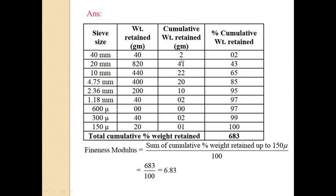So this percentage weight retained how we can calculate it. That is the weight retained on each IS sieve divided by total sample multiplied by 100. We get this value 2. So once again, this weight retained on this 40 mm IS sieve that is 40 divided by total weight of sample 2000, multiply by 100 we get the value 2. Similar way we are finding the percentage weight retained on each IS sieve. That is 820 divided by 2000 multiplied by 100 we get 41, and lastly the 150 micron.